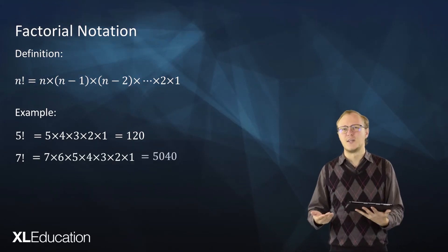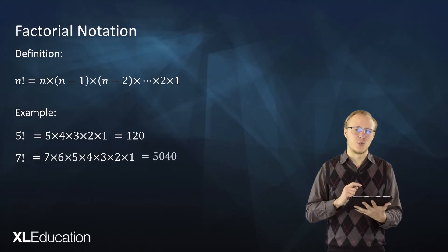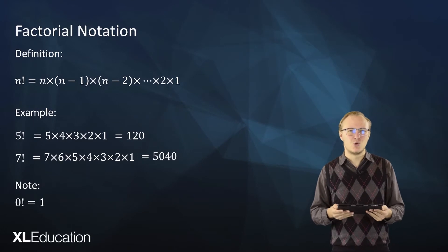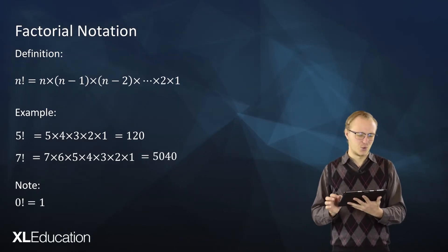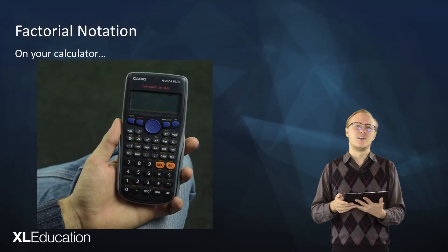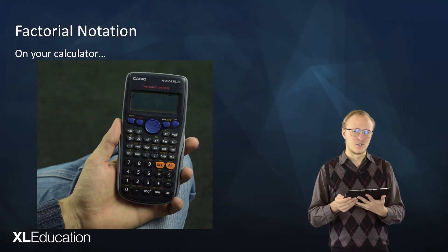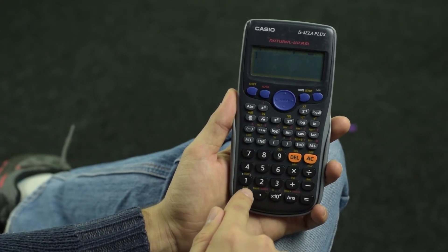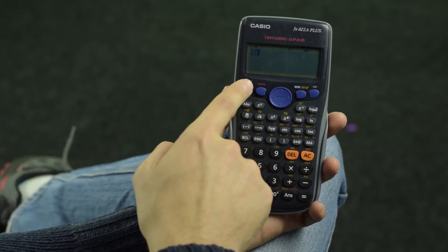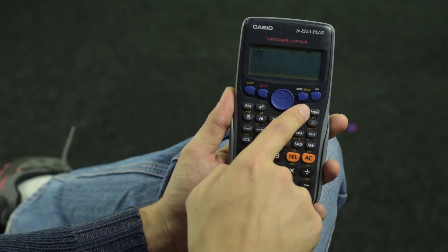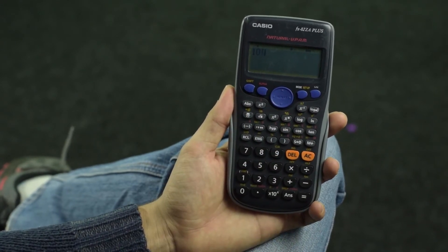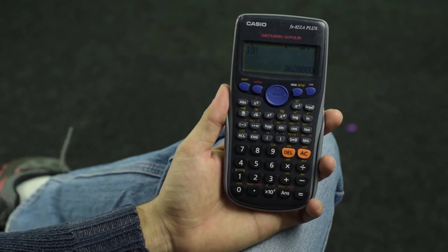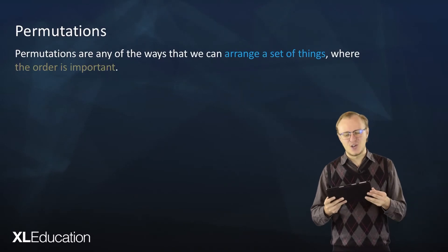An important definition: zero factorial is equal to one — that's just something we have to know about factorial notation. We can also use our calculator for factorial notation. To calculate 10 factorial, enter the number 10, then hit shift and hit the button with x factorial on it, giving you 10 factorial. When you hit equals you'll get a pretty big number equal to 10 factorial.